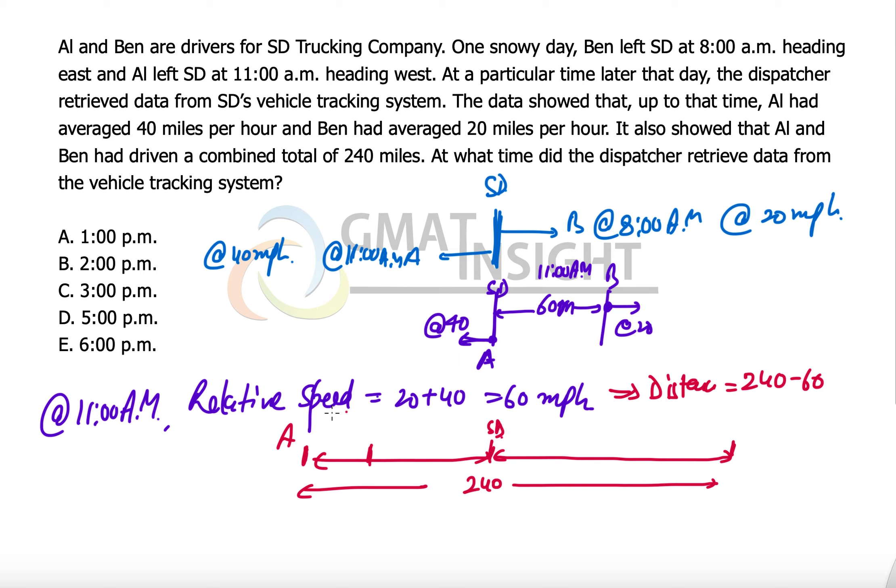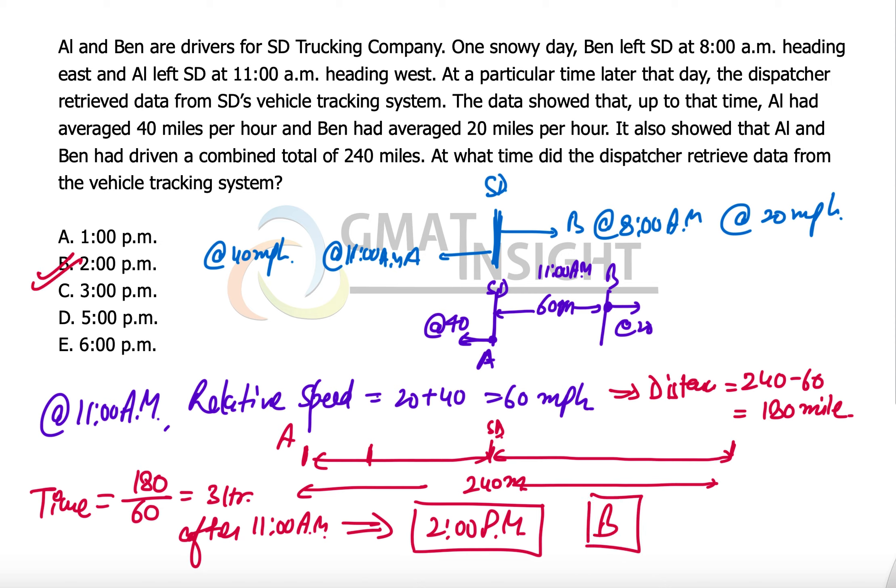So that is 180 miles was the distance traveled at relative speed. So the time to travel this 180 miles at a relative speed of 60 miles per hour should be equal to 3 hours. Three hours after 11 AM, the tracking system must have tracked them at 240 miles apart. So 3 hours after 11 AM makes it 2 PM. So that becomes our answer, option B. Thank you so much for watching this video.